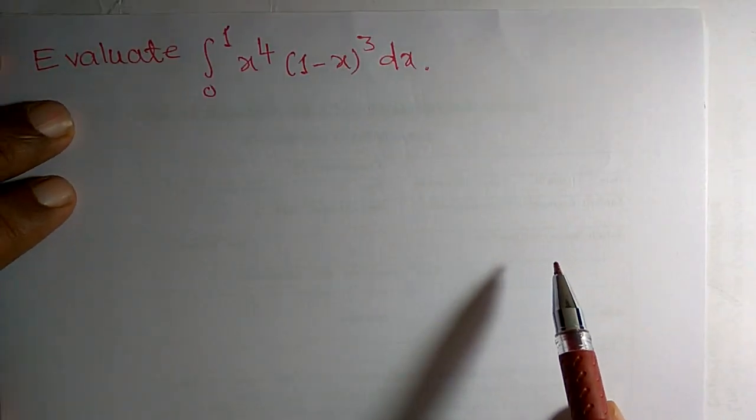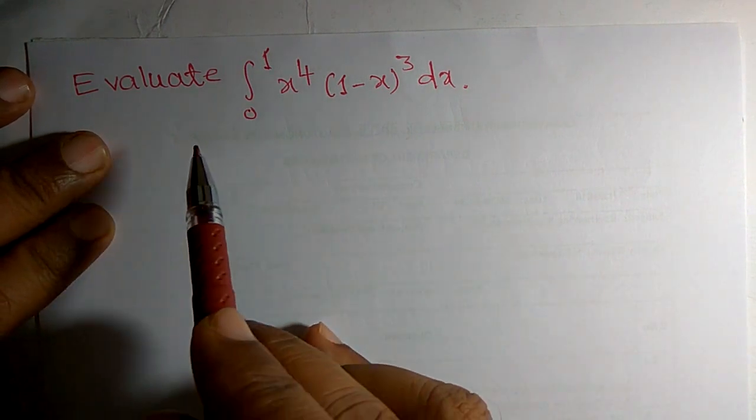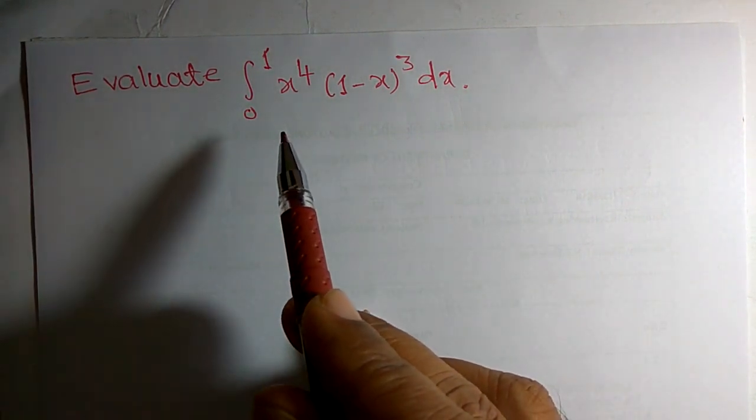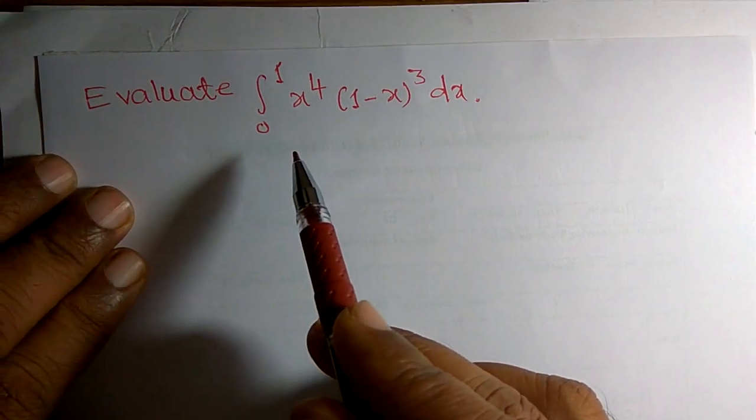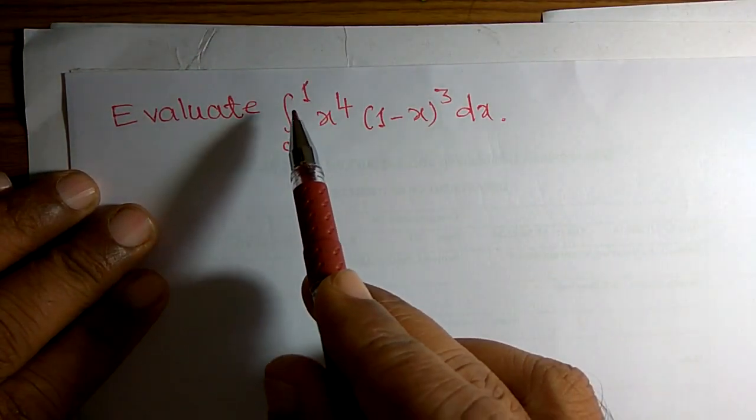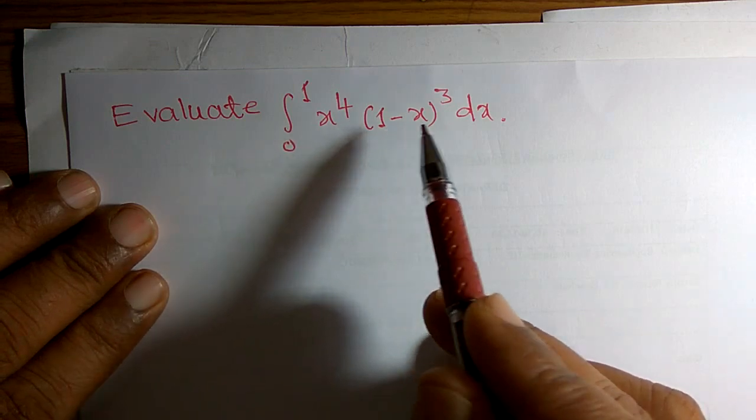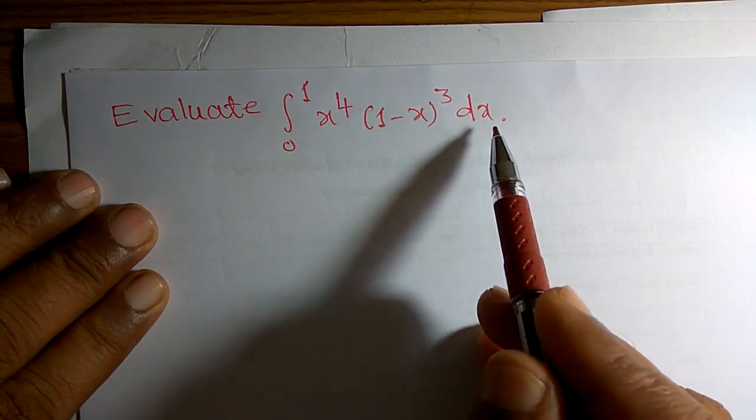In this video, I am going to solve one example about beta and gamma functions. It is given that integration 0 to 1, x raised to 4 into 1 minus x to the power 3 dx.